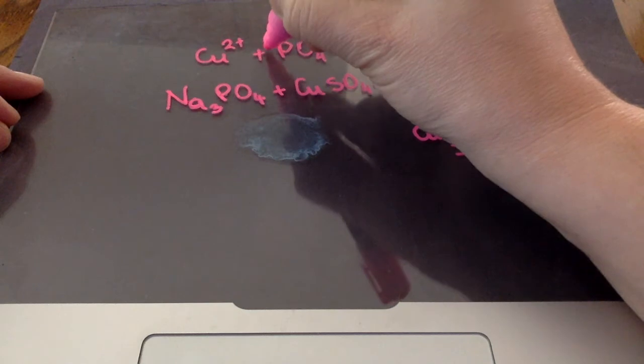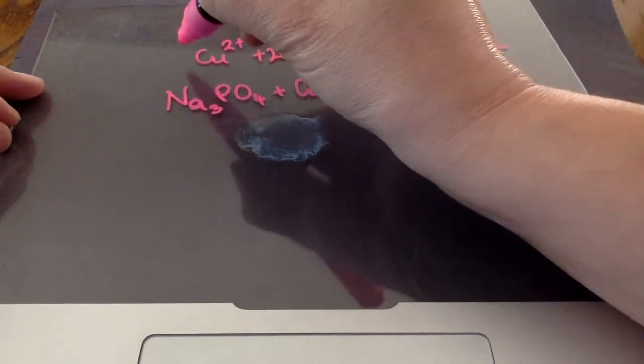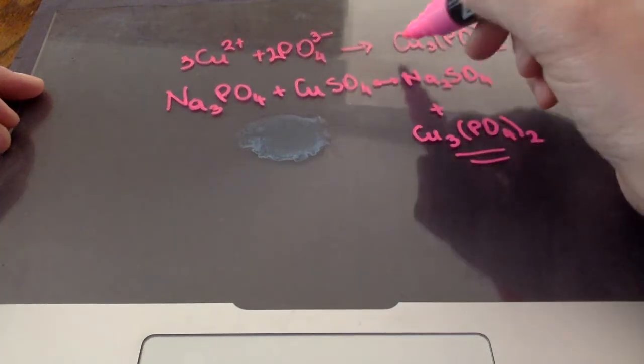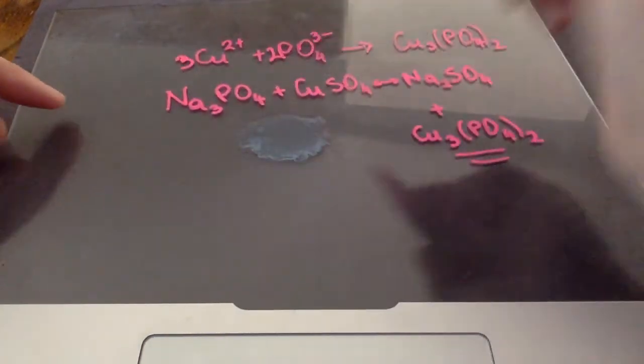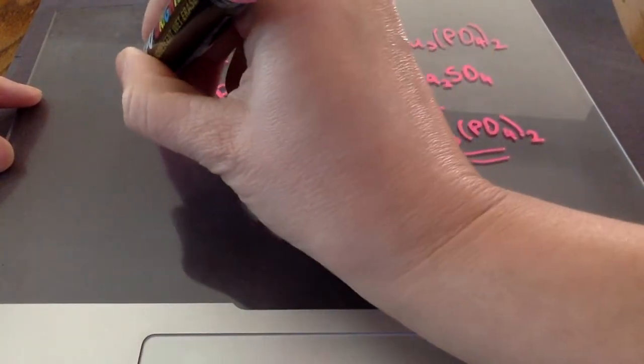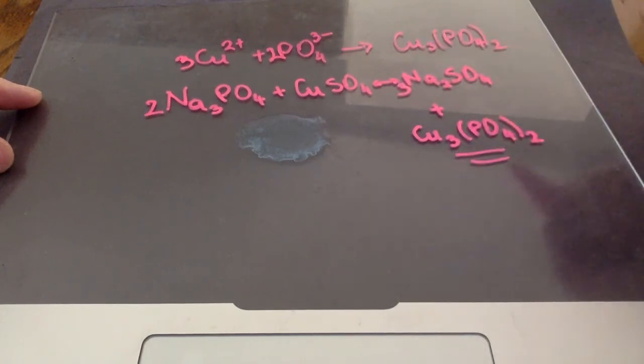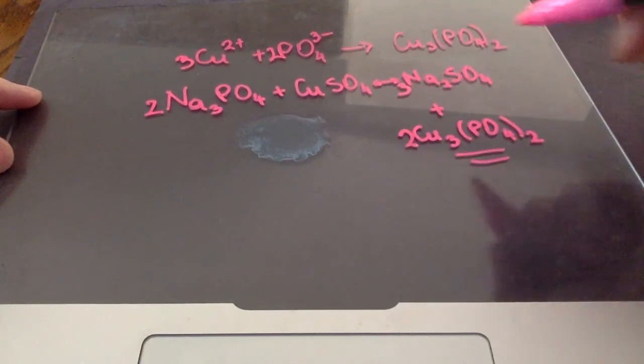And we didn't balance them, but you need 2 phosphates here and a 3 here for the copper. And we also need to balance the full chemical equation here. We need 2 sodiums here, 3 over here.